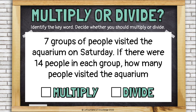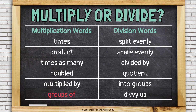Seven groups of people visited the aquarium on Saturday. If there were 14 people in each group, how many people visited the aquarium? 'Each group' and 'groups of' — those words suggest that we need to multiply.